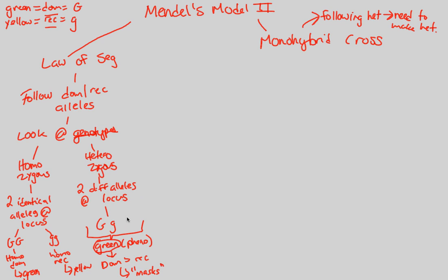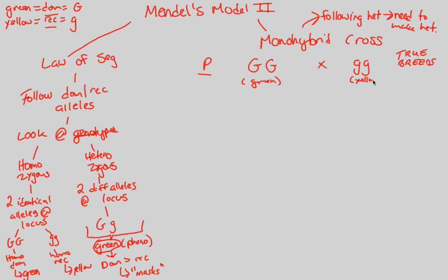The heterozygote is capital G, lowercase g. To get this arrangement, we start with the parent generation P. We need a cross that will give us one capital G and one lowercase g — a parent with two capital Gs crossing with a parent with two lowercase gs. These are both true breeding parents with identical alleles. The consequence is one green parent and one yellow parent, and once this cross happens, meiosis will occur.